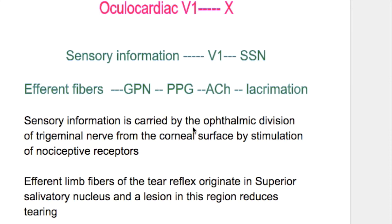For the tearing reflex, sensory information is carried by the ophthalmic division of the trigeminal nerve from the corneal surface by stimulation of nociceptive receptors.